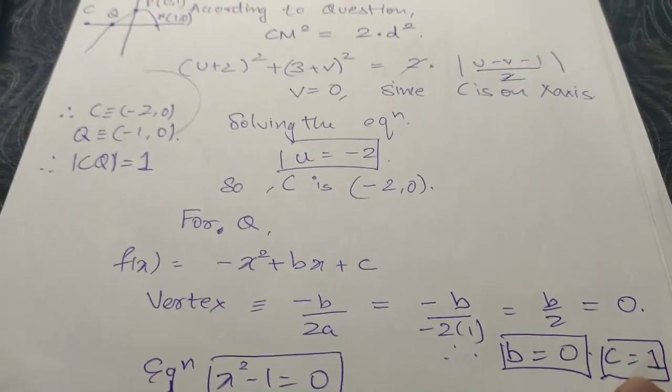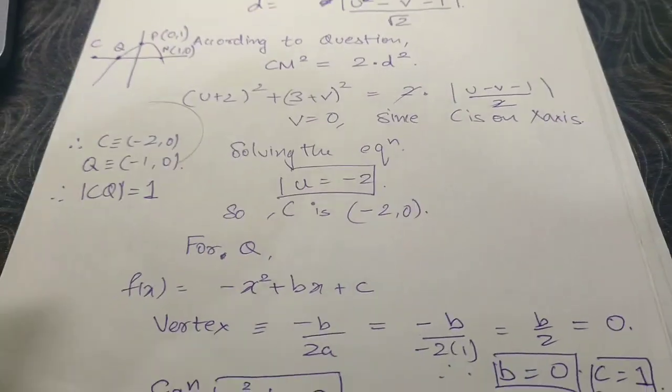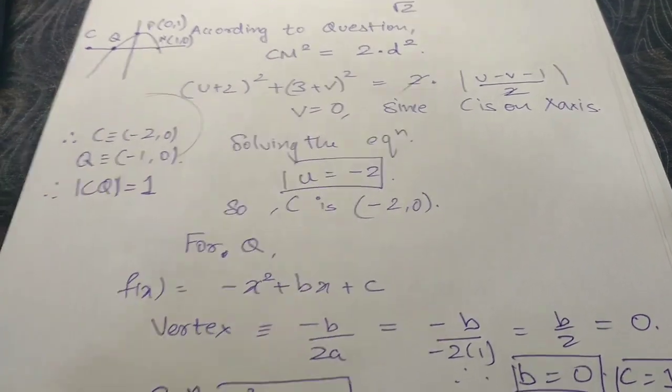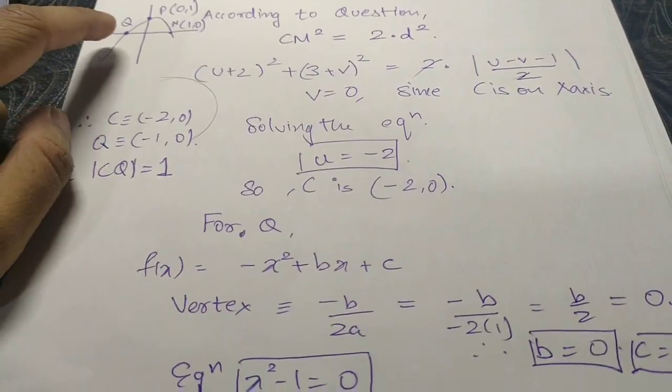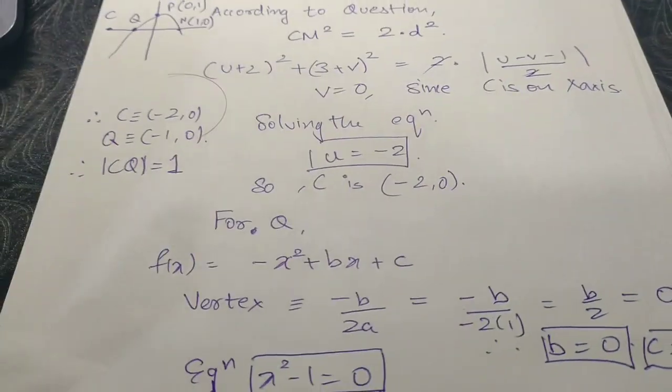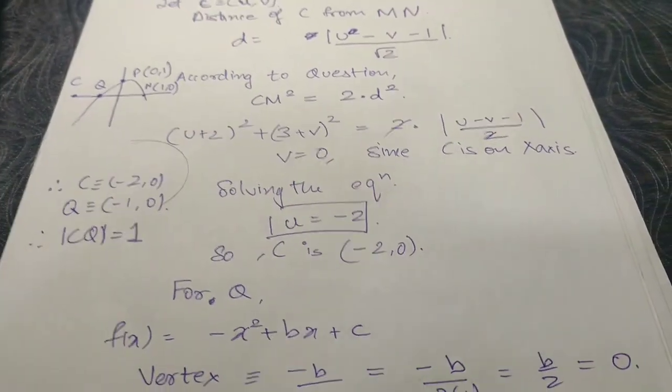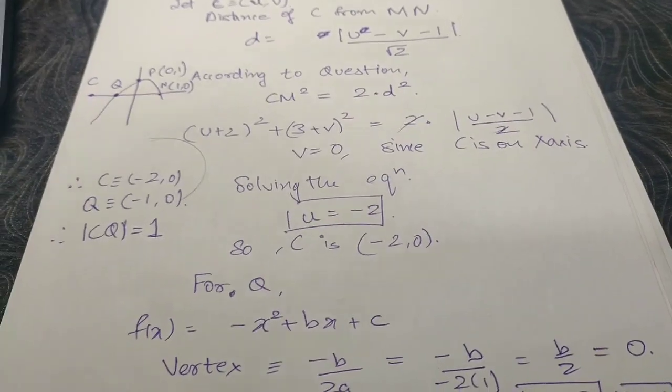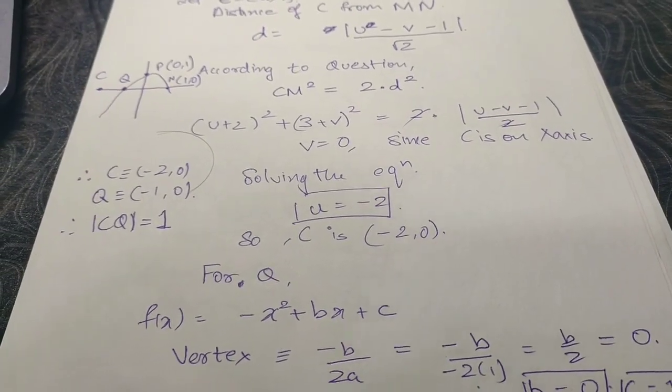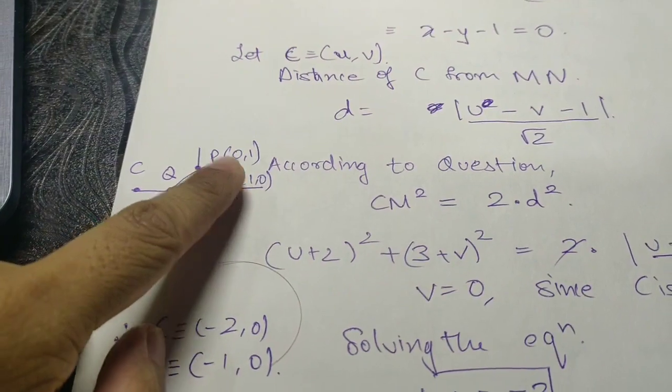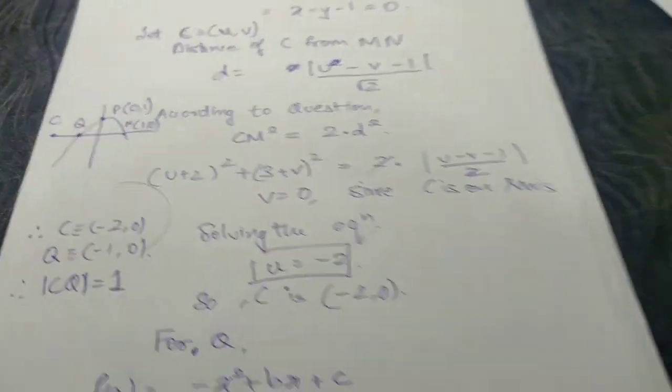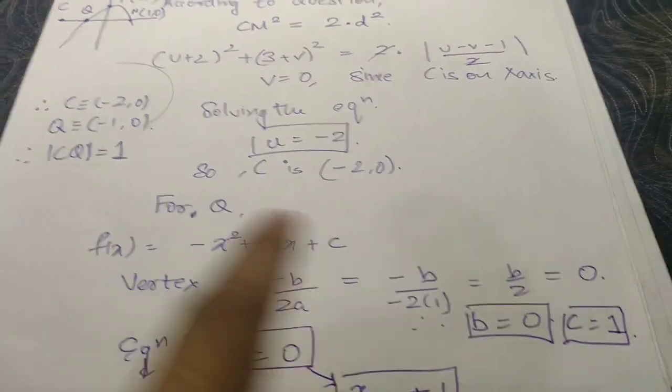Why c equals to one? Because if we check, c is the y-intercept of the parabola, meaning the point at which the parabola cuts the y-axis. Since we know the point as P and that y coordinate is one, we say that c equals one. So we got the equation y = -x² + 1.